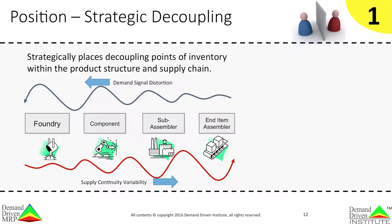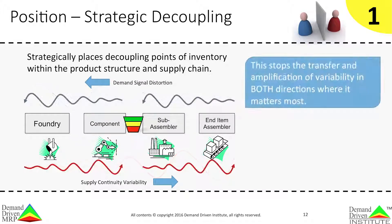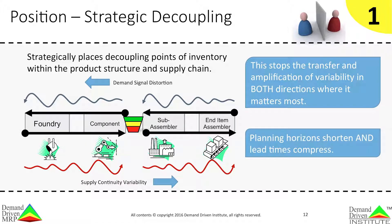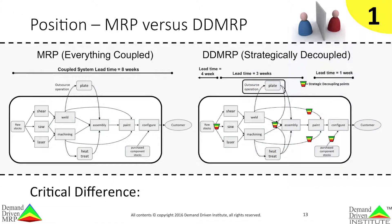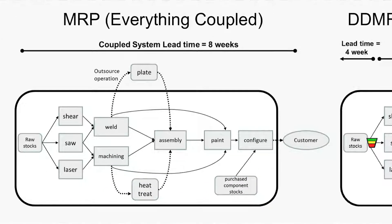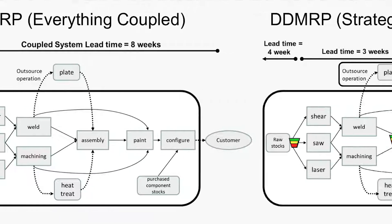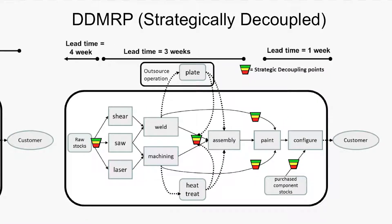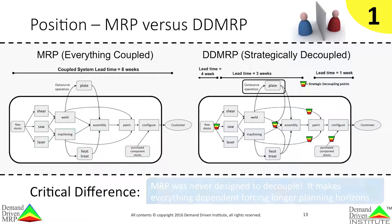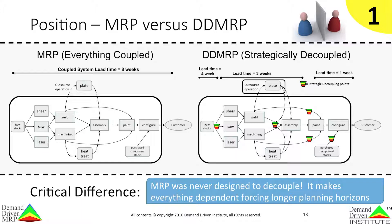DDMRP strategically places decoupling points of inventory within the product structure and supply chain. These points are carefully selected through a variety of factors. This placement stops the transfer and amplification of variability in both directions at these strategic points. Planning horizons shorten and lead times compress immediately. On the left, MRP couples every activity together, producing a longer planned lead time where date and quantity changes in one thing affect everything. On the right, a DDMRP design uses decoupling points to create shorter, independent planning horizons that stop cascading effects, compressing market lead time to one week. MRP was never designed to decouple — it makes everything dependent, forcing longer planning horizons and introducing massive system nervousness.